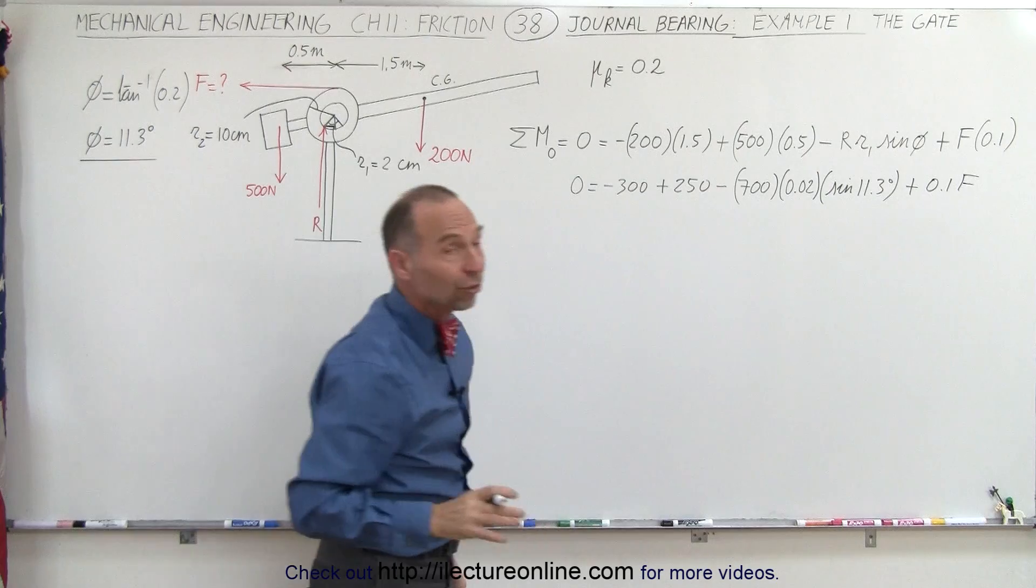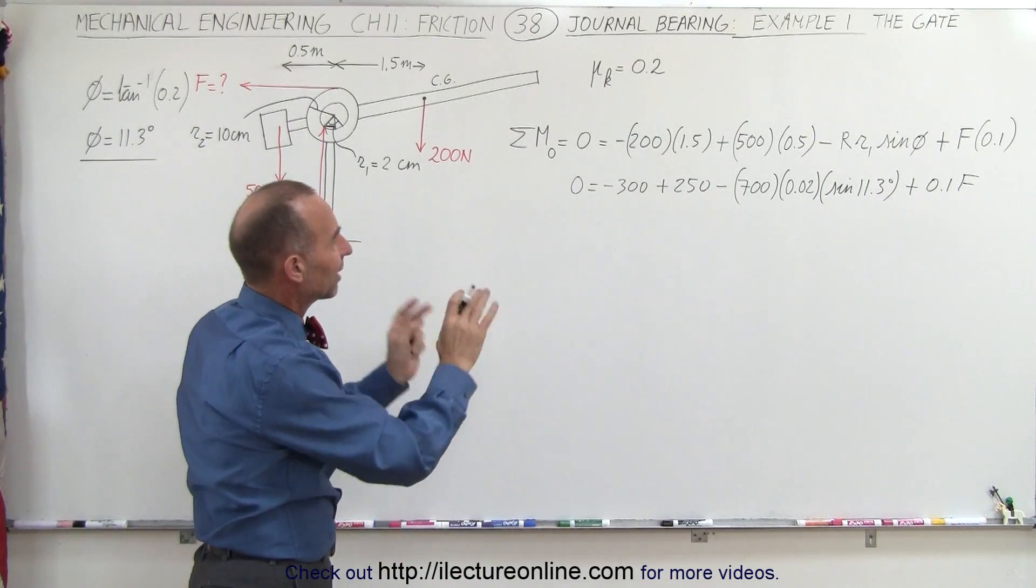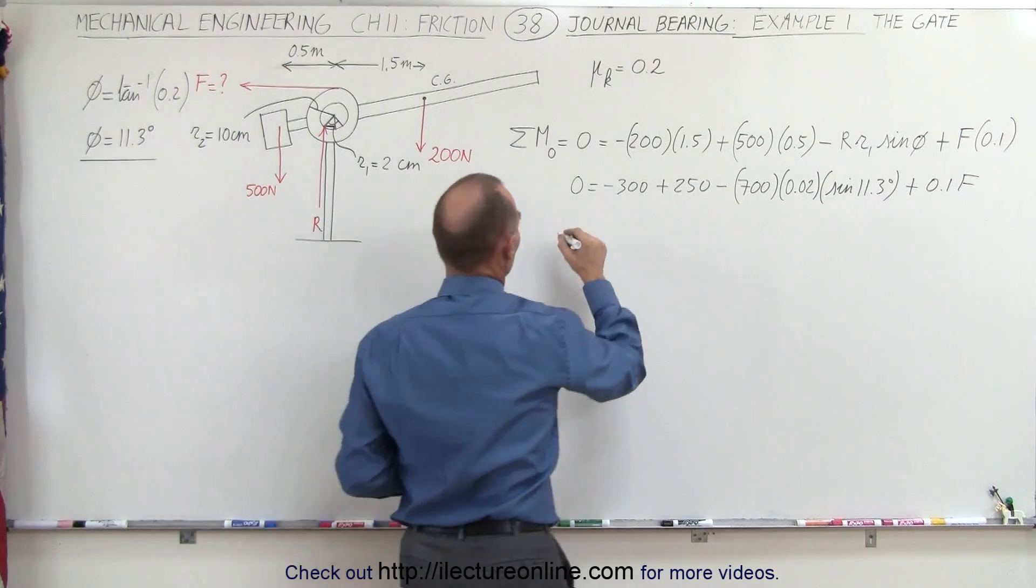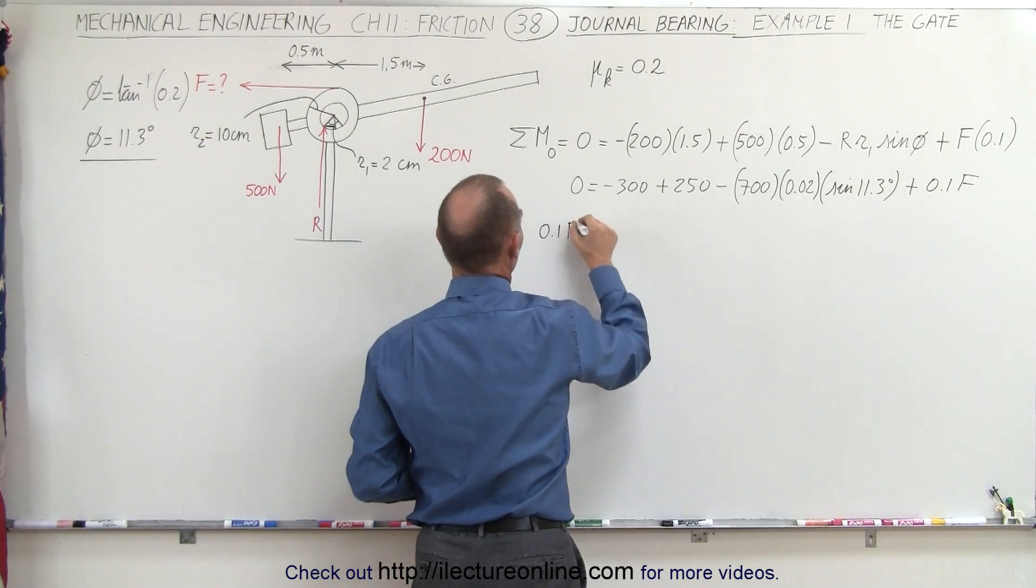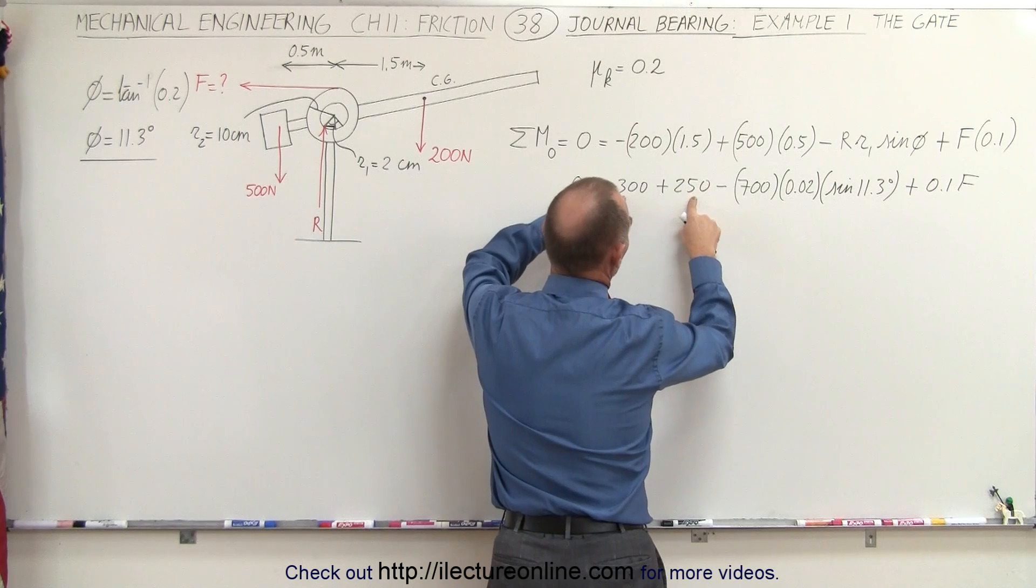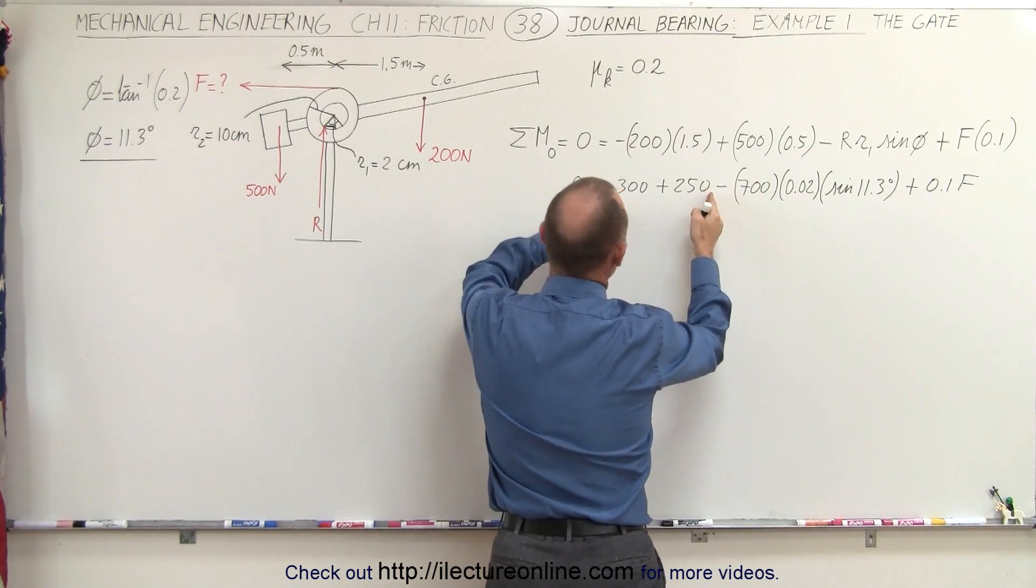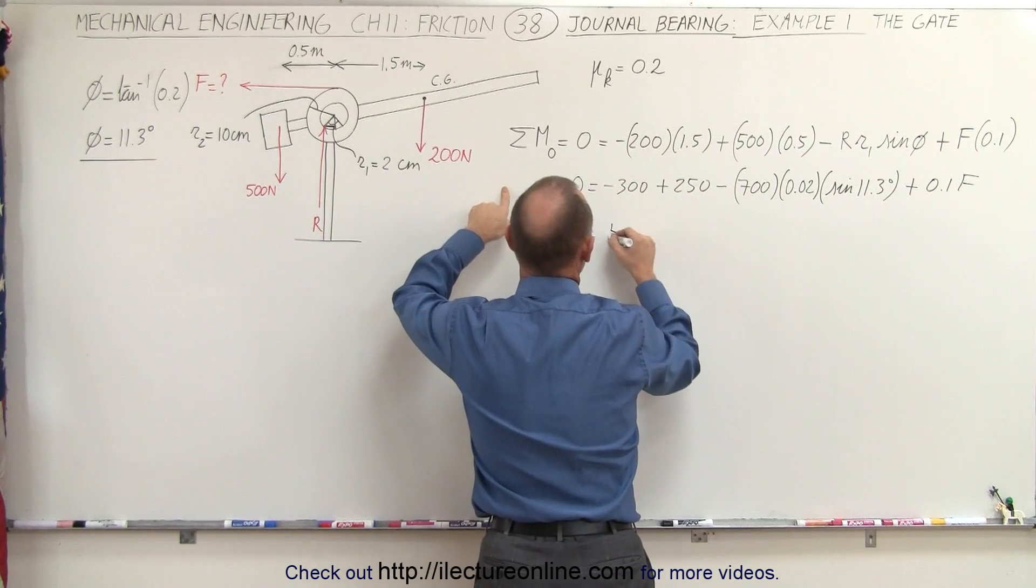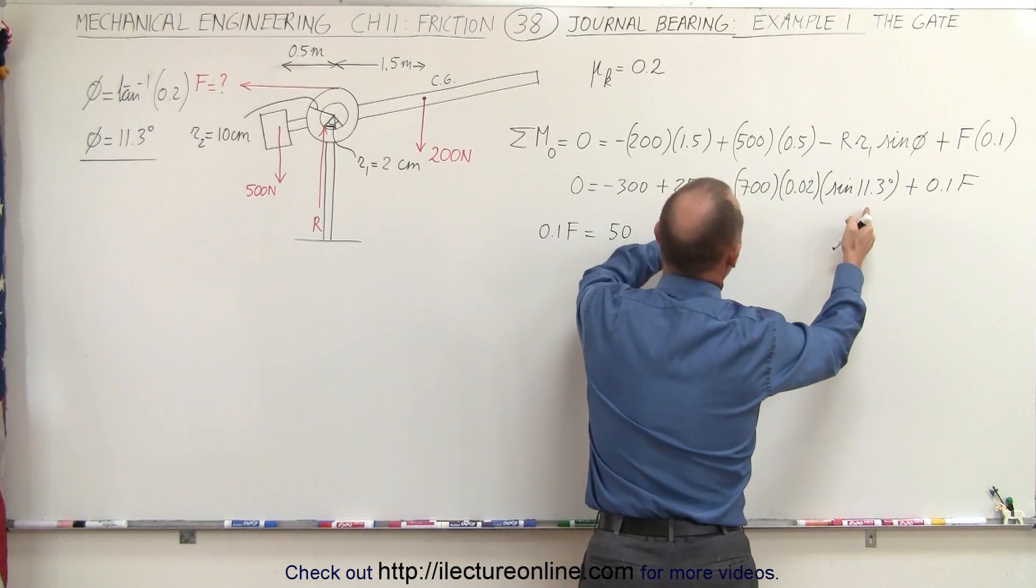Now we're ready to solve for F. We can move F to one side, everything else to the other side. So we have 0.1 F equals, we have a minus 300 and a plus 250, that's minus 50, move to the other side becomes plus 50.